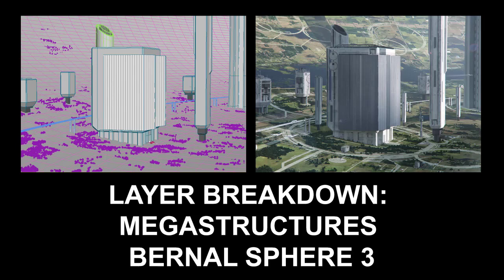Hi there. My name is Neil Blevins, and this is a layer breakdown for my painting called Megastructures Bernal Sphere 3. My Twitter buddies Isaac Hannaford and Rajnathem asked me for a few more details on how I made this particular painting. And since it's also the most liked image I have on ArtStation, I figured I'd give you a quick discussion of how it was made.